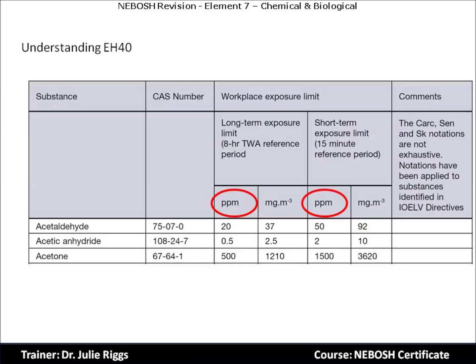We next need to understand the workplace exposure limits, which are expressed as parts per million and milligrams per cubic metre. The time-weighted average is expressed as long-term exposure — eight hours — and short-term exposure — fifteen minutes. Parts per million are used for measuring gases, and milligrams per cubic metres are for solids, such as particles and dusts.